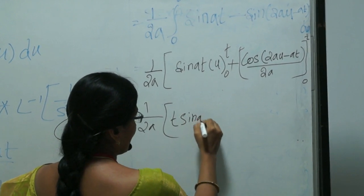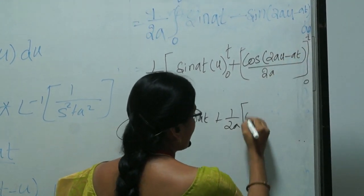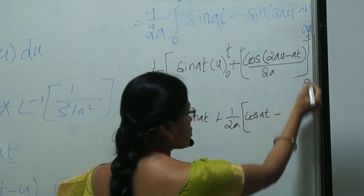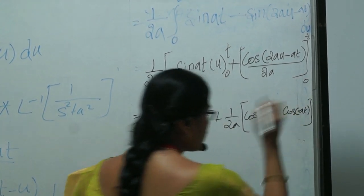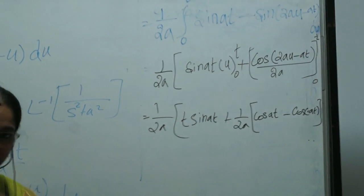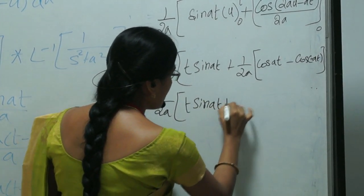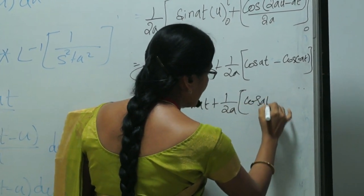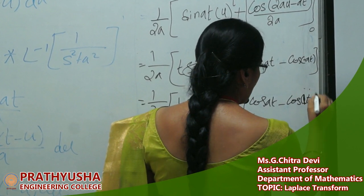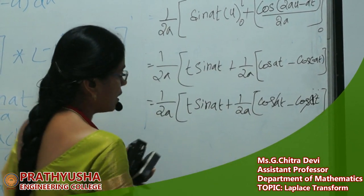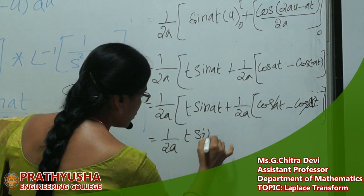So the result is 1/(2a) times [t·sin(at) + cos(at)/(2a) − cos(at)/(2a)]. The cos(at) terms cancel. The final answer is 1/(2a) times t·sin(at). Thank you.